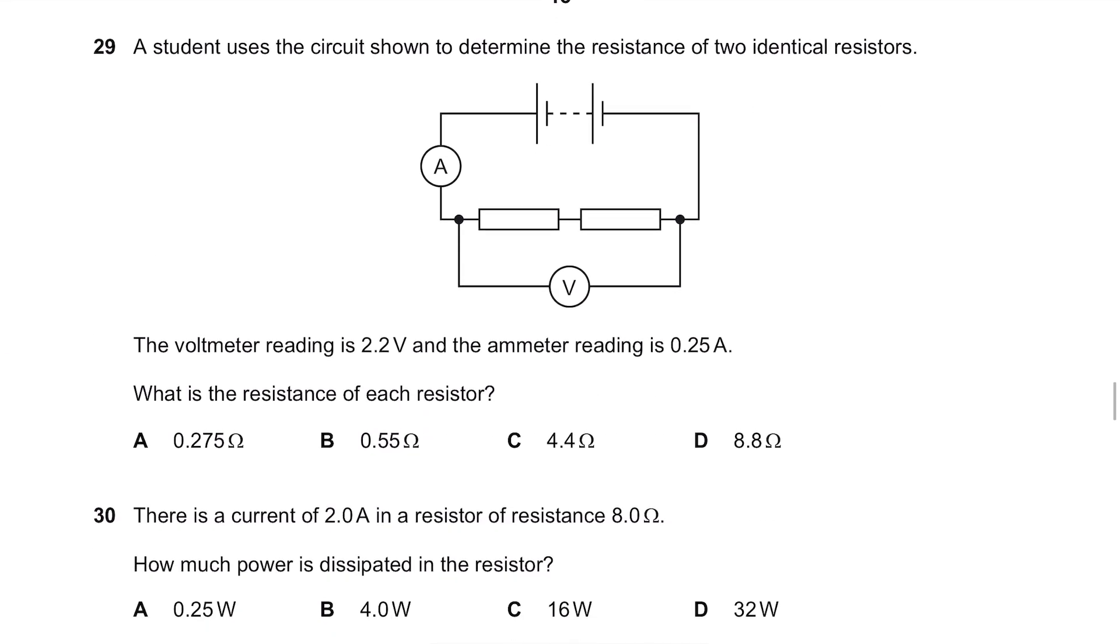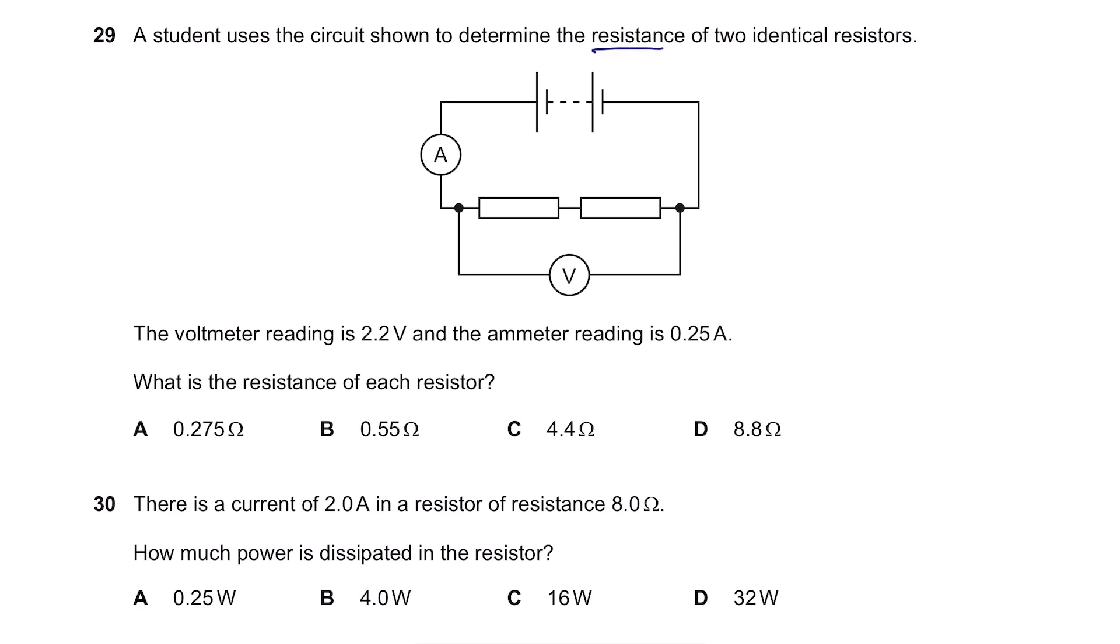Question 29. A student uses the circuit shown to determine the resistance of two identical resistors. The voltmeter reading is 2.2V and the ammeter reading is 0.25A. What is the resistance? Resistance equals voltage divided by current. Let's first calculate the resistance. That is 2.2 divided by 0.25. It's 8.8 ohms. But don't stop here. It's not the end. You need to remember that there are two resistors. Well, since these are in series, the resistance just adds up. So, in fact, there will be 4.4 ohms here and 4.4 ohms here. And they asked for the resistance of each resistor. So our answer is C.